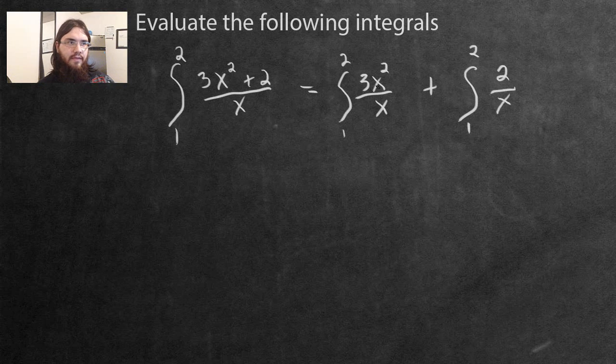Now, three x squared divided by x is just gonna be three x, right? Because one of the x's cancel out. So this will just give me, what is the integral from one to two for just three x? And then, of course, we have this one up here, but let's just deal with the first one.